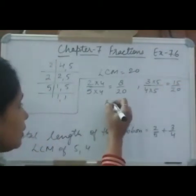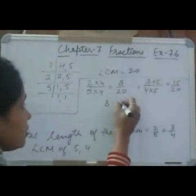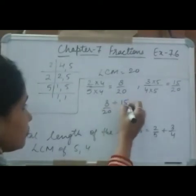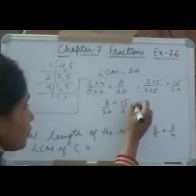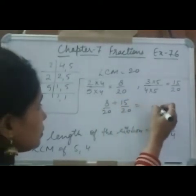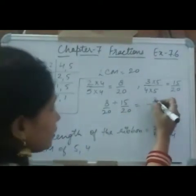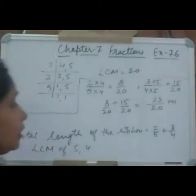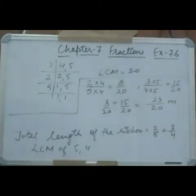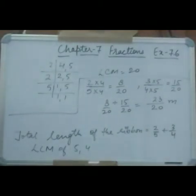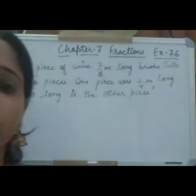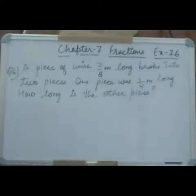Now add the numerators: 8 plus 15 equals 23. So the total length of the ribbon is 23/20 meter.